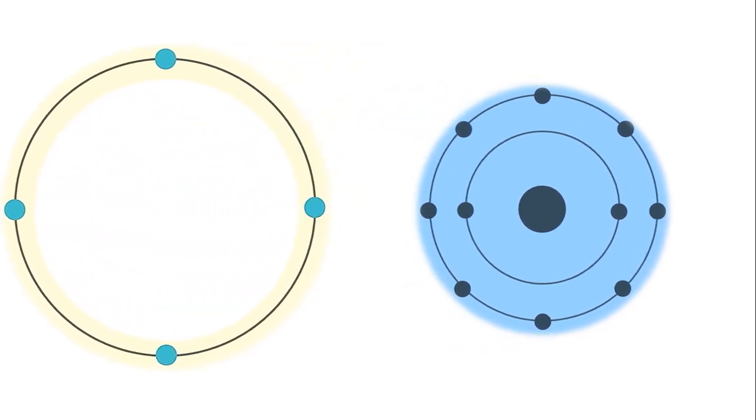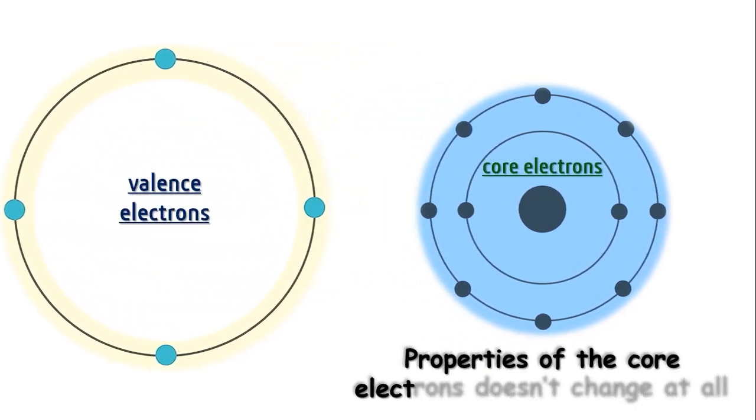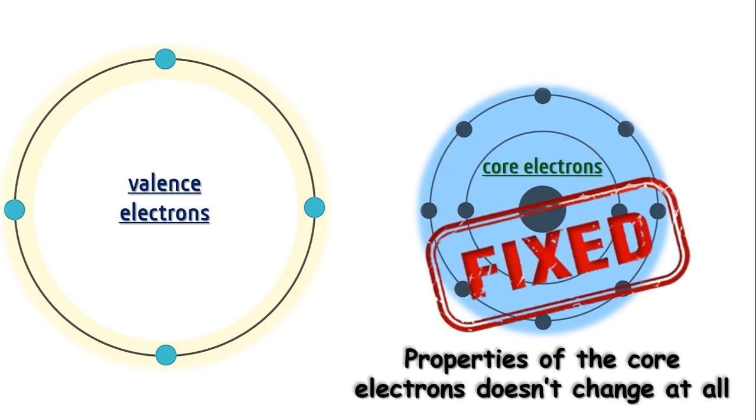We should be able to perform DFT calculations by keeping the core electrons as they appear in the isolated atom. That is, the properties of the core electrons are then fixed in all the subsequent calculations; they are not actually changing.